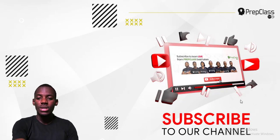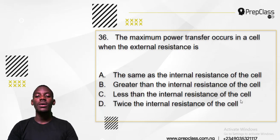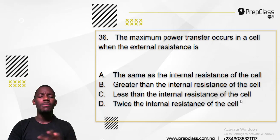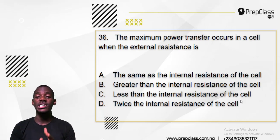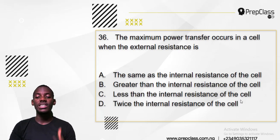Let's get to the questions now. Number 36: the maximum power transfer occurs in a cell when the external resistance is what? If you have a cell like a battery, when does the maximum power of the battery occur? Is it when the external resistance is A, the same as the internal resistance; B, greater than the internal resistance of the cell; C, less than the internal resistance; or D, twice the internal resistance of the cell?